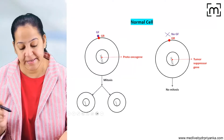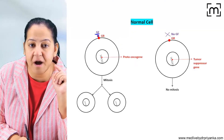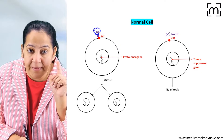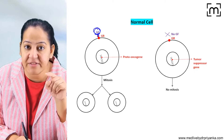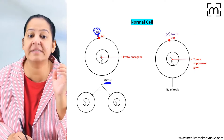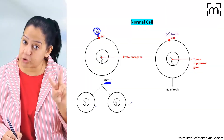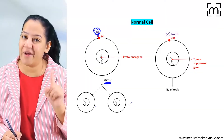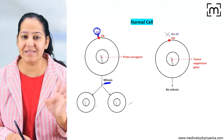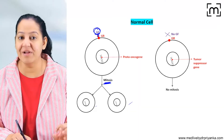What do we mean by a normal cell? In the first cell shown, the growth factor is coming and binding with the growth receptor. When the growth factor binds with the growth receptor, this cell undergoes mitosis and divides from one cell into two cells. If the growth factor is absent, division does not occur. You can say mitosis is under physiological control.